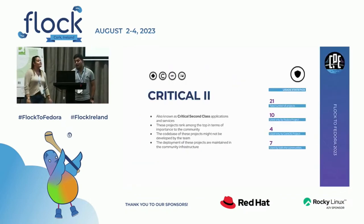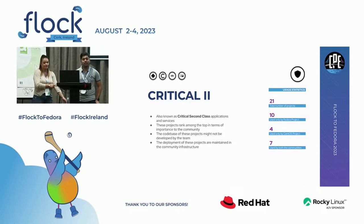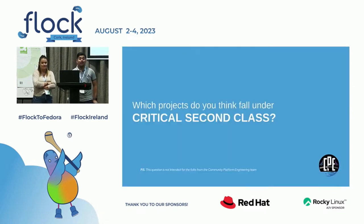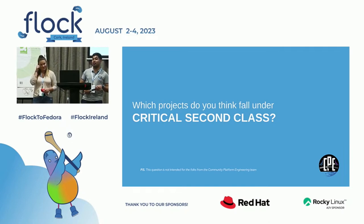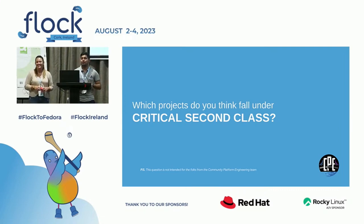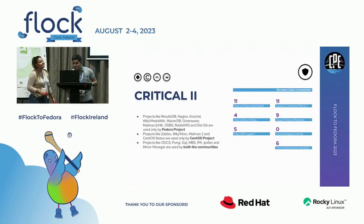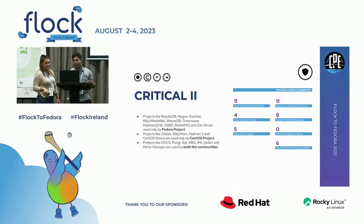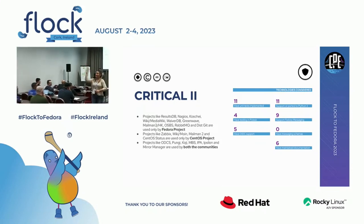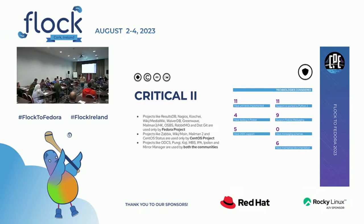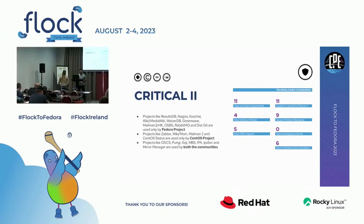Moving on to critical applications class two: 21 in total, 10 used by Fedora project only, four only by CentOS project, and some by both communities. Any guesses which projects fall under this critical second class? Audience suggests Koji and FreeIPA — and yes, Koji is used by both communities; you can see it at the bottom of the list. Prizes are thrown to the correct guessers.